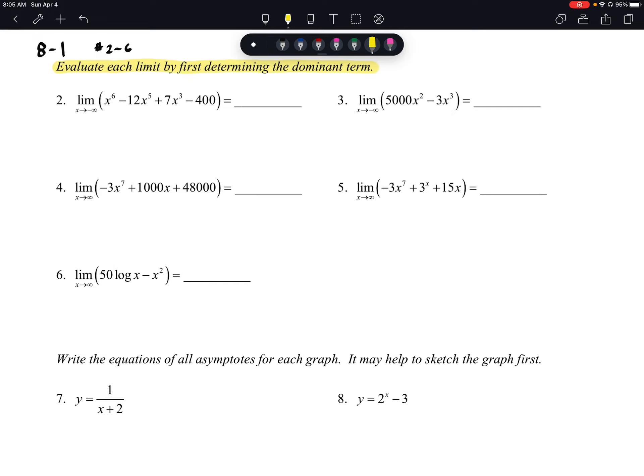As we look at number 2, it says the limit as x approaches negative infinity of this function: x to the 6th minus 12x to the 5th plus 7x to the 3rd minus 400.